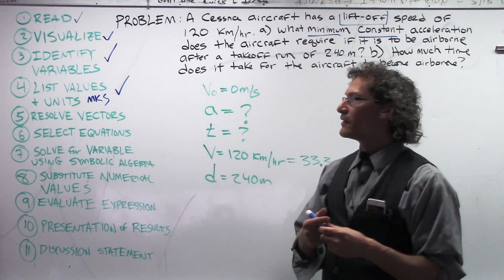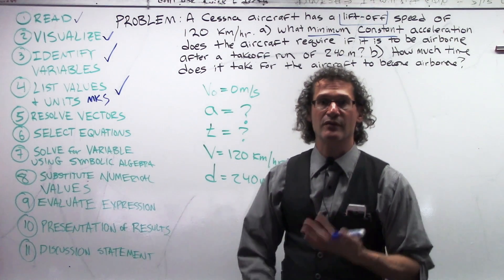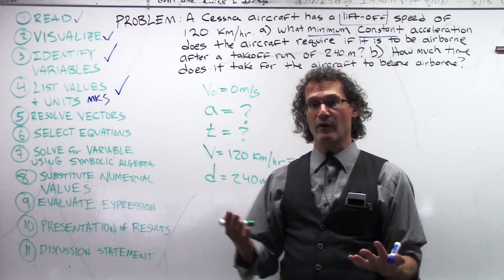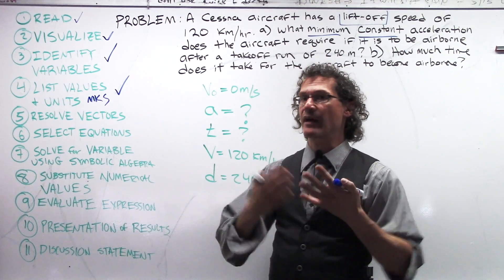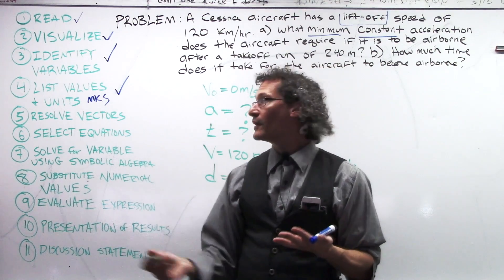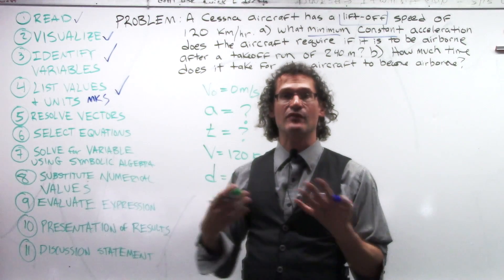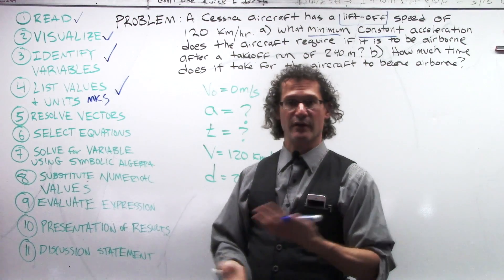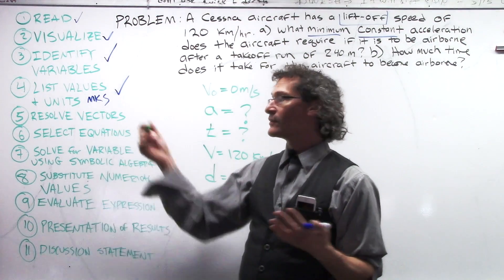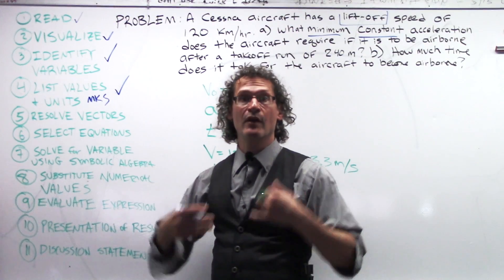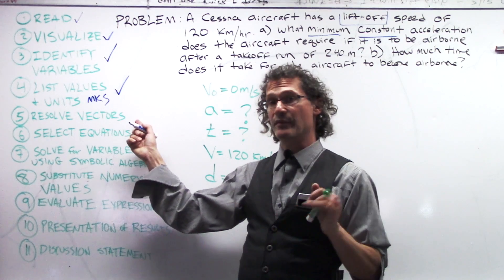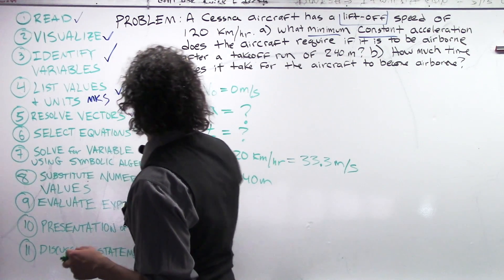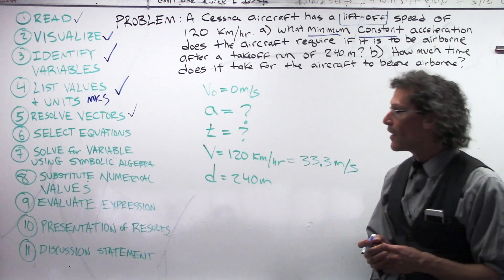Number five, we don't have to take care of because this is not a two-dimensional problem. Our vectors are in one direction. We're not even moving backwards. We're okay. We don't have to separate an angle. When we have angle situations, that's when we would resolve vectors. There's no angle here. So, we're okay to actually just check that right off. When we do that style of problem in the future, you'll see where this step is necessary. So, we need to select equations.